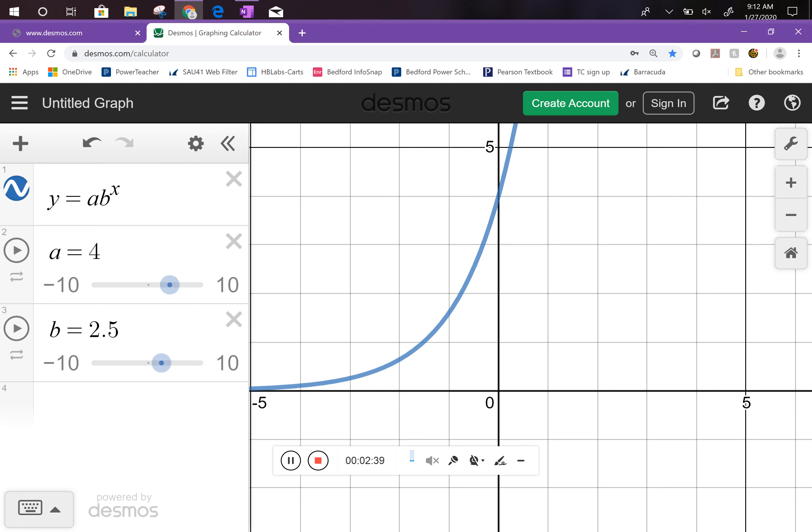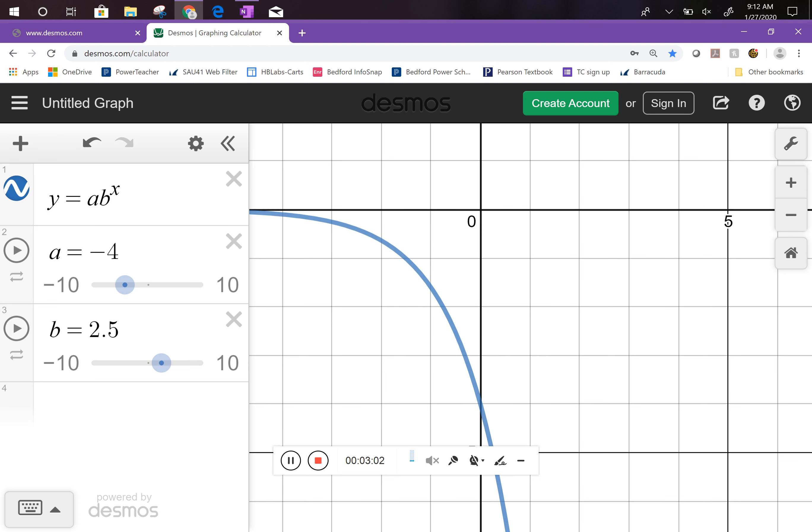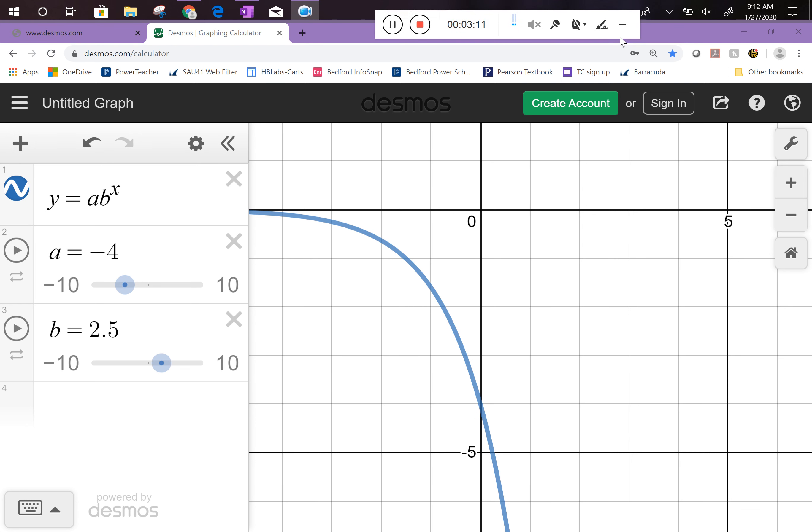So this first number, the a value, it has a lot of names. Sometimes it's called the y-intercept because that's what it is, right? That's the terminology we're used to. But in the context of exponential functions it gets other names as well. It's often called the initial value, so initial, like the first one. So the initial value or the starting value or the amount it's based on. That's what the a value is, the initial amount, or we can also think of it as the y-intercept.